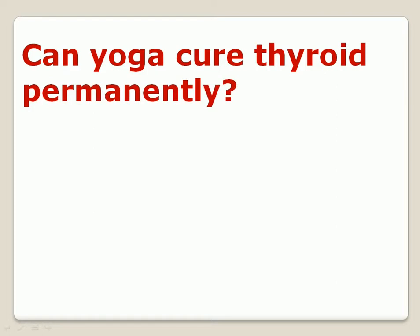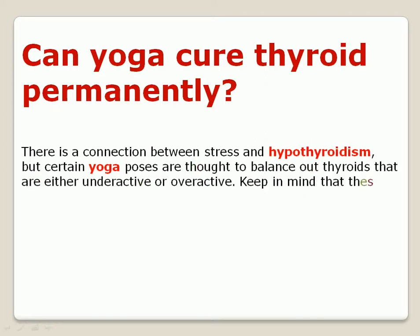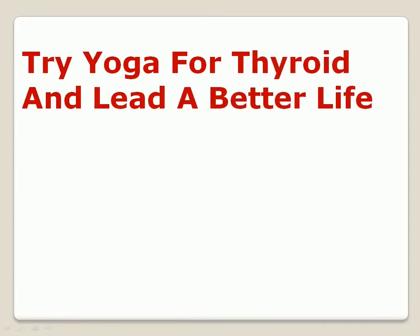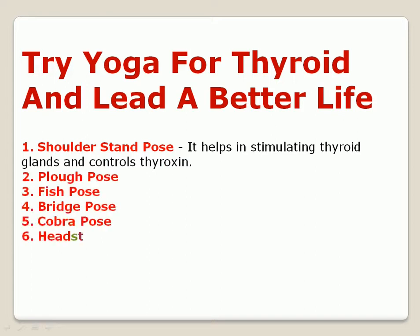Can yoga cure thyroid permanently? There is a connection between stress and hypothyroidism, but certain yoga poses are thought to help balance thyroids that are either underactive or overactive. Keep in mind that these poses cannot cure your thyroid imbalance — yoga is considered a complementary therapy. Yoga poses for thyroid include: 1) shoulder stand pose, which helps stimulate thyroid glands and controls thyroxine, 2) plow pose, 3) fish pose, 4) bridge pose, 5) cobra pose, and 6) headstand pose.